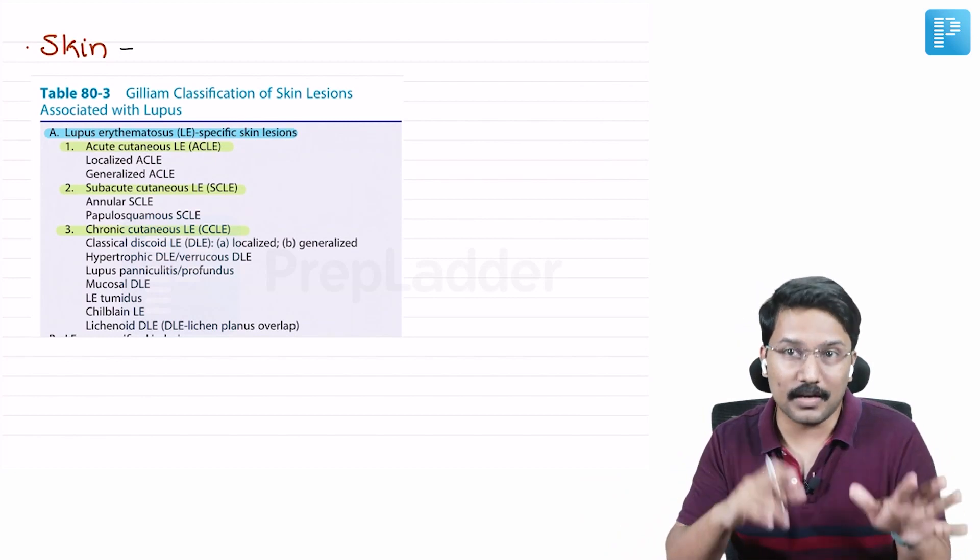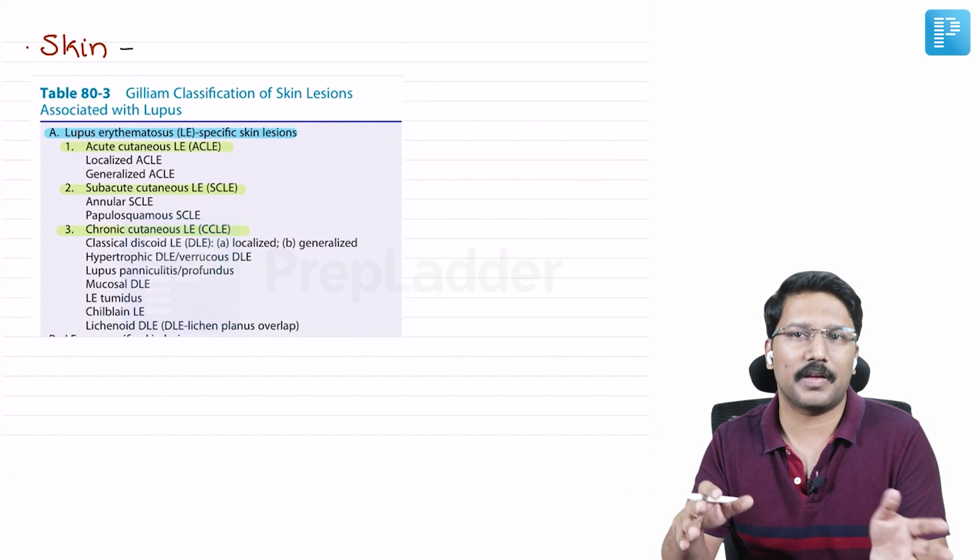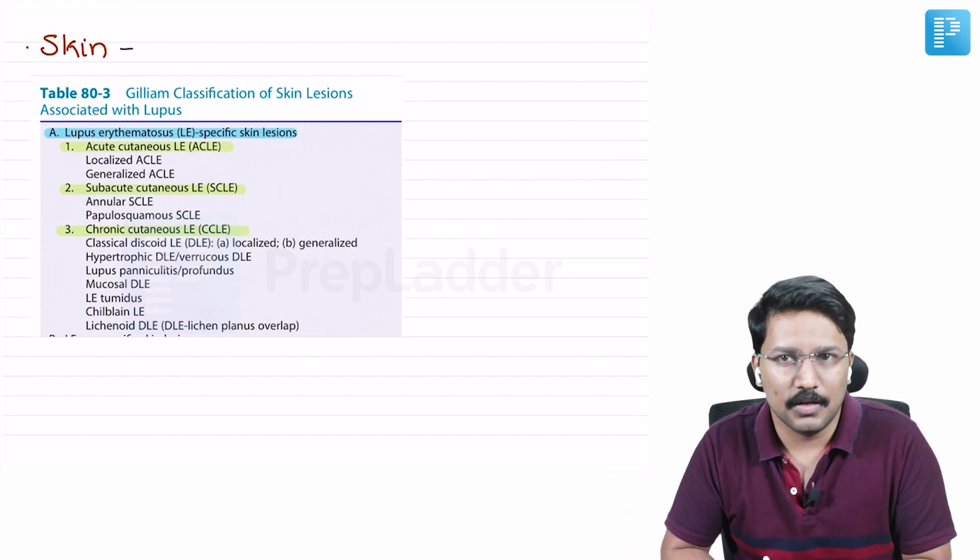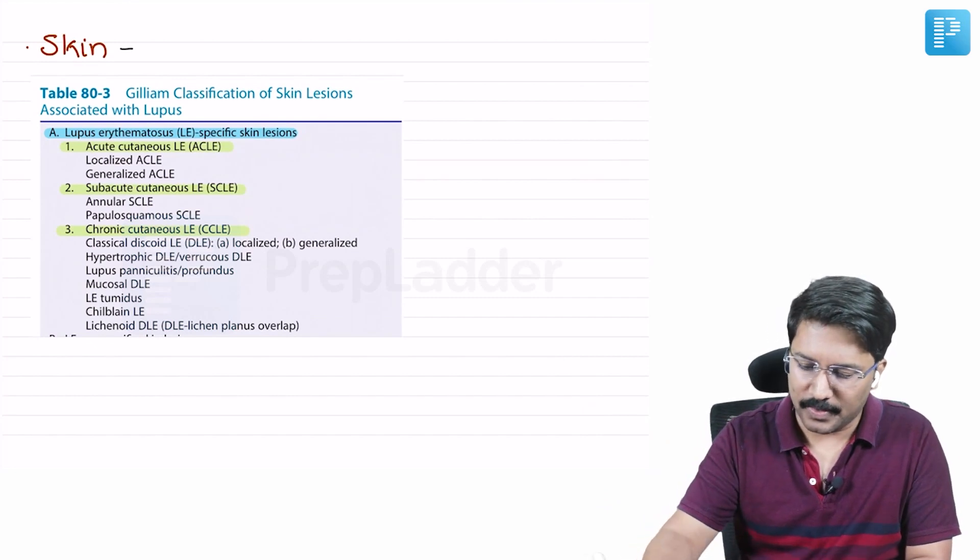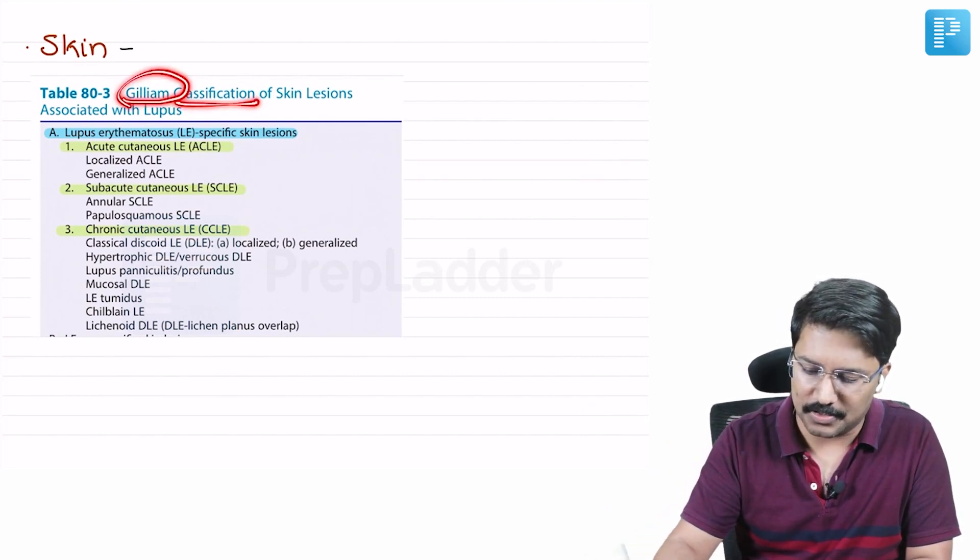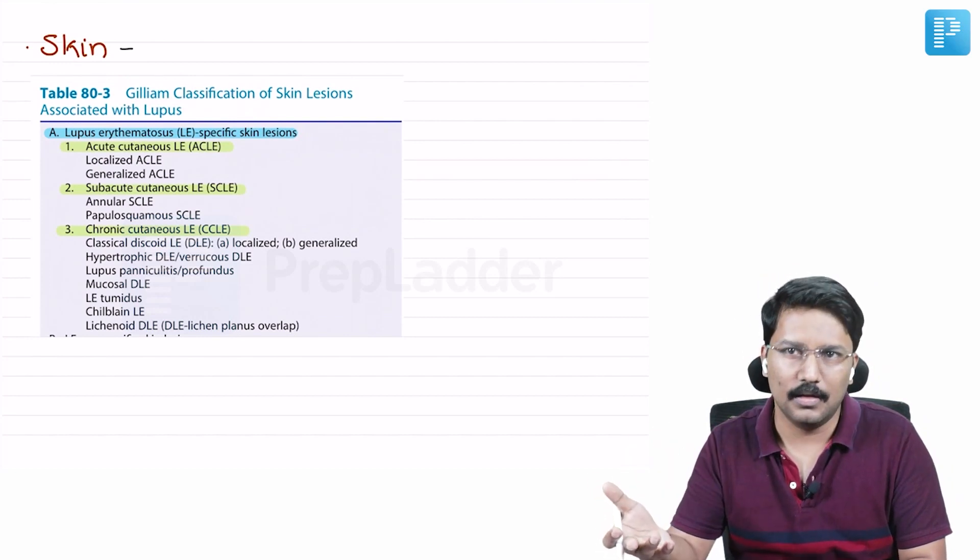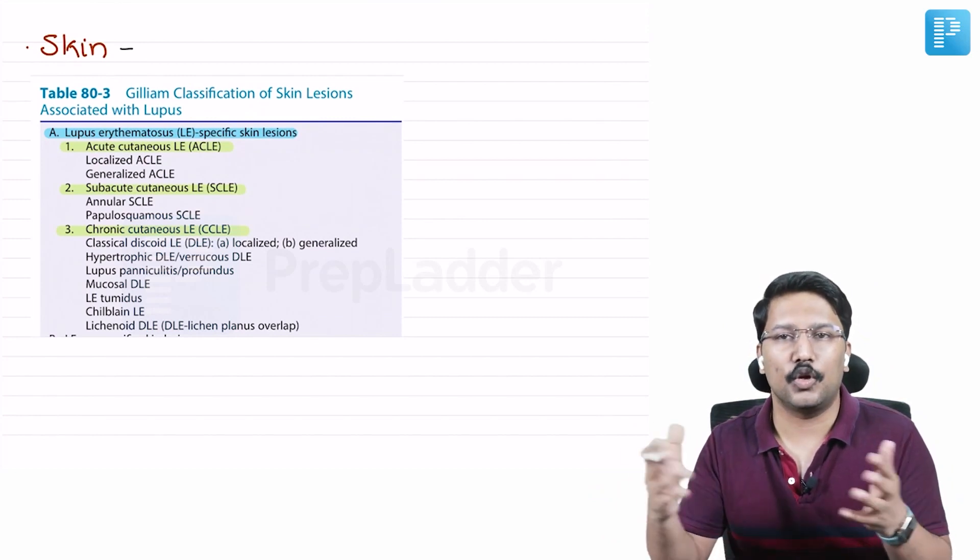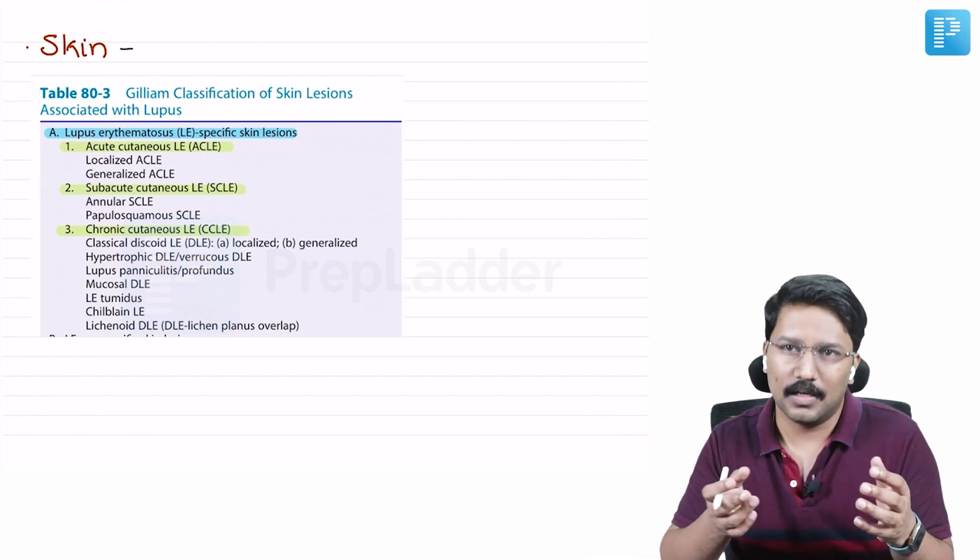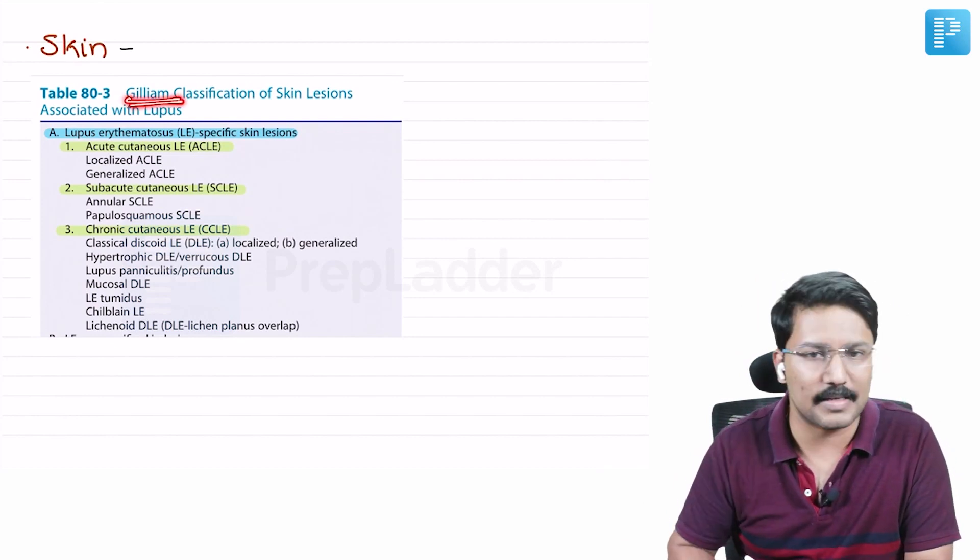So we should be aware about what lesions constitute the specific lesions and what are the lesions which are nonspecific that may occur in other rheumatological disorders. And this classification into specific and nonspecific has a name - Gilliam classification. So be aware about this name also. This can be asked as a question, like the Gilliam classification is concerning with lupus nephritis or skin lupus or something like that. So be aware about the name Gilliam classification.